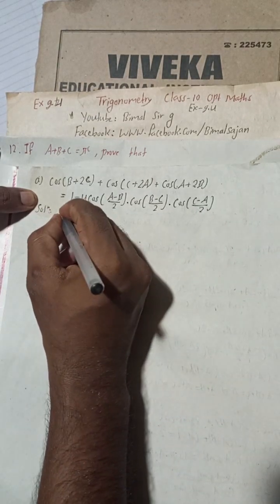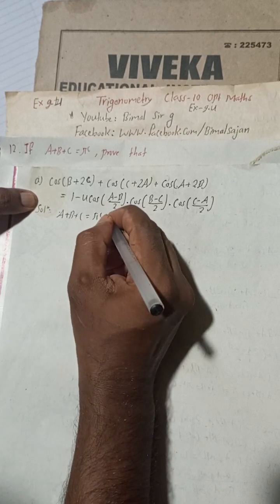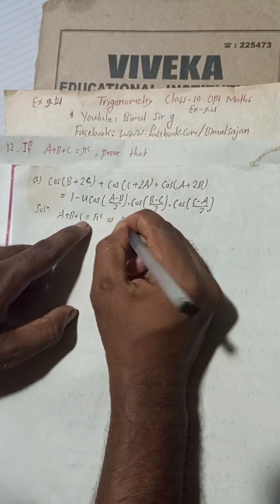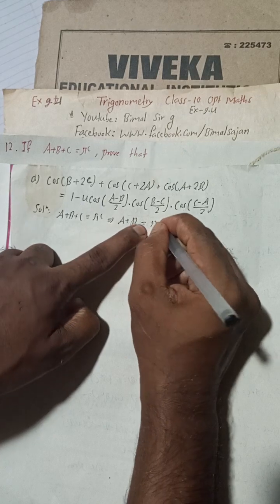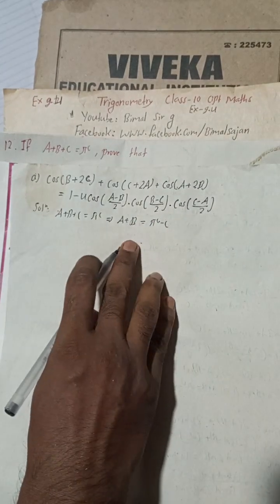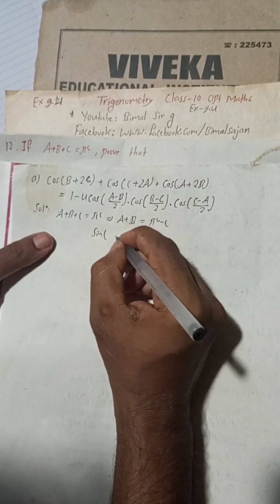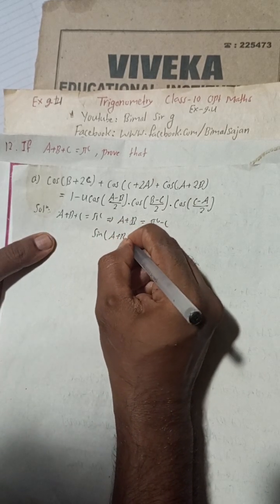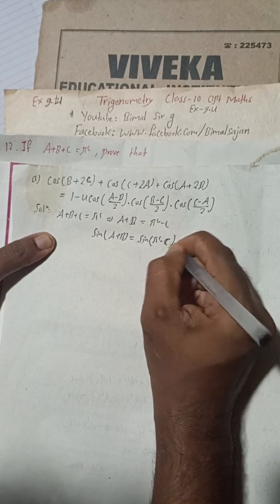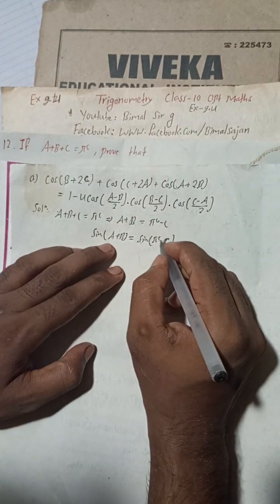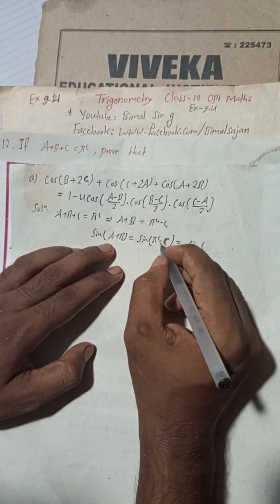Given: a + b + c = π. This implies a + b = π − c. Taking sine on both sides: sin(a + b) = sin(π − c). Since π − c is in the second quadrant, sine is positive, so sin(a + b) = sin c.